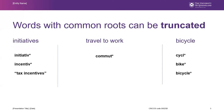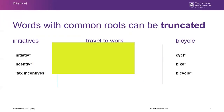Truncation or stemming is used to expand research by retrieving potential variations of a keyword that use the same root or stem. Truncation is represented with an asterisk. For example, the word 'initiative*' with an asterisk will pull all information containing initiative or initiatives, and 'commute*' with an asterisk will retrieve articles with commute, commuting, or commuter.